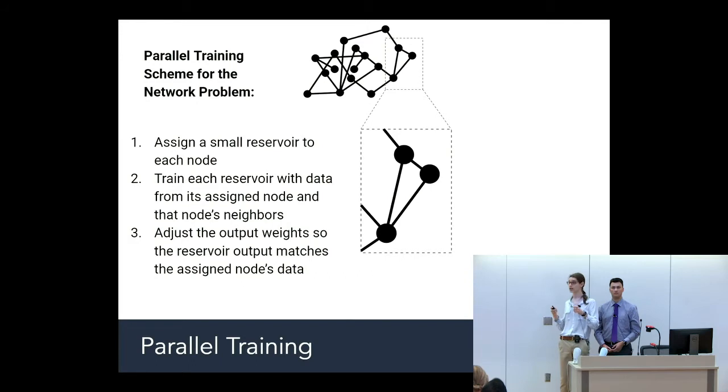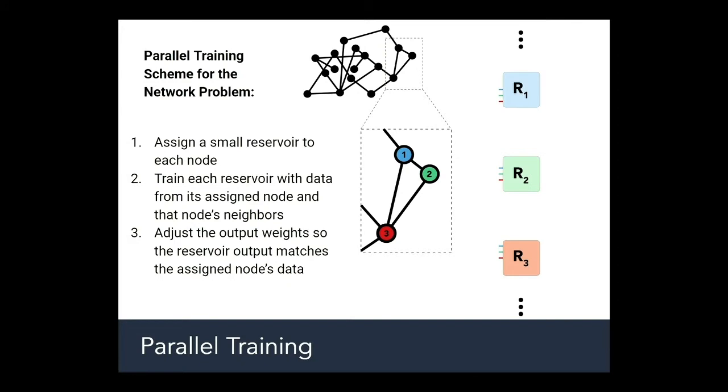What we did with our network is use a parallel training approach where each node gets a reservoir assigned to it. The reservoir receives data from the node it's assigned to and all of the neighbors of the assigned node. This image is simplified. It focuses on node 2 connected to reservoir 2 because its only neighbors are 1 and 3.